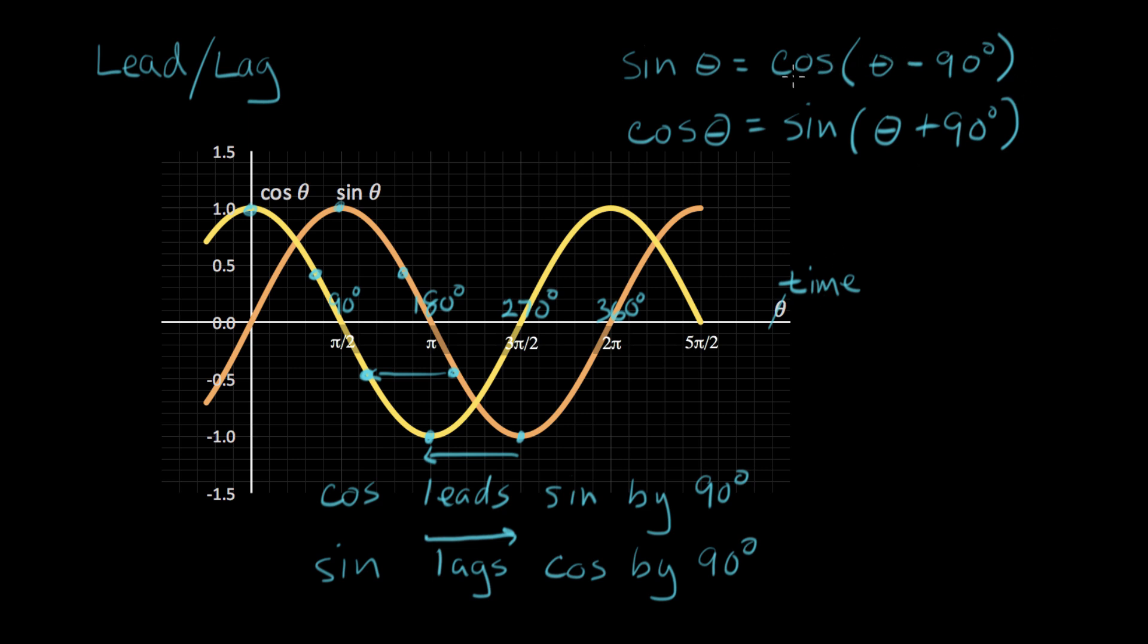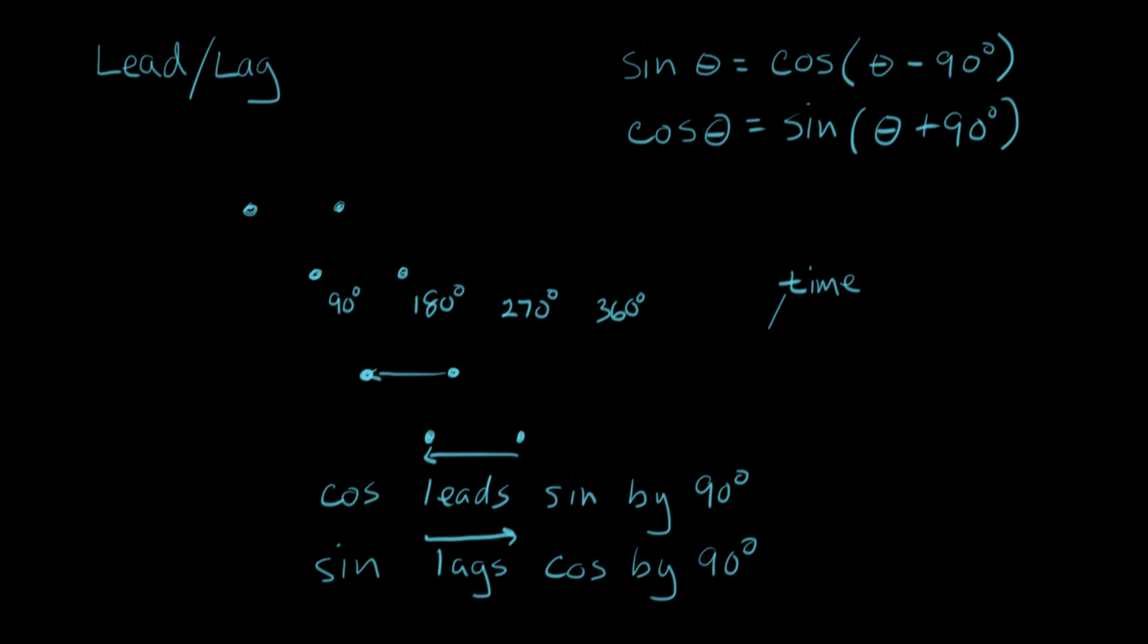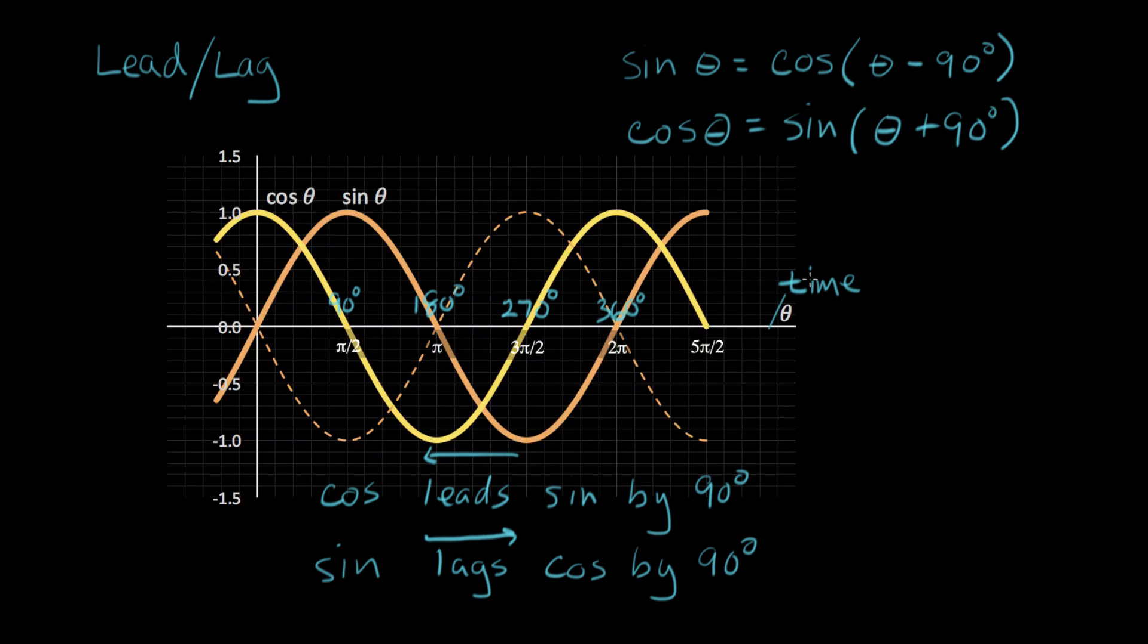So these are two identities. We can use this to convert something expressed as a sine into a cosine, or vice versa. Now I want to show you two more identities that are actually pretty useful. And here what I have is, I've sketched on in dashed lines the negative of the orange curve. So this is a negative sine wave. You can see it's the opposite of the original sine wave we had.